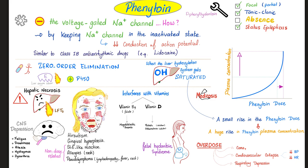Your brain will be inhibited — that's why we use it for seizures — and your heart will be inhibited — that's why we can use it for arrhythmias. Because as Dr. Conrad Fisher said, what is a seizure but an arrhythmia in your brain? What is arrhythmia but a seizure in your heart? It's all about electrical hyperexcitability.